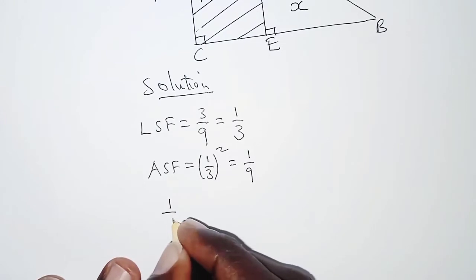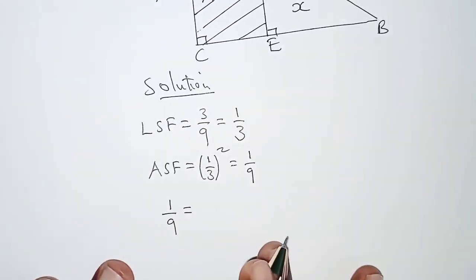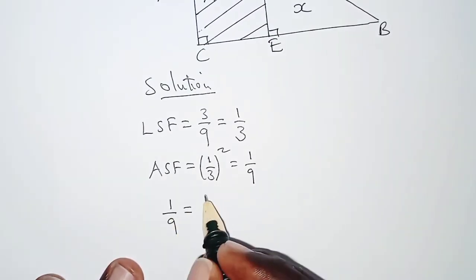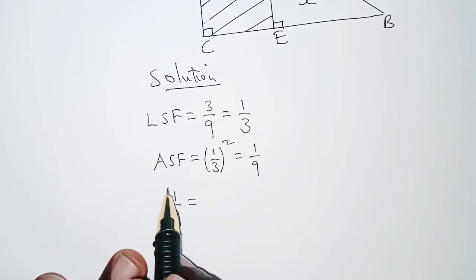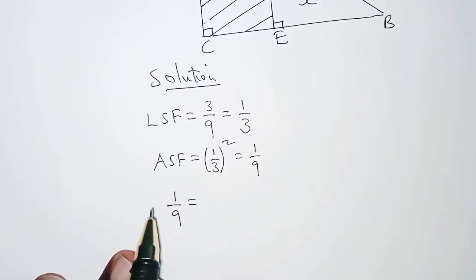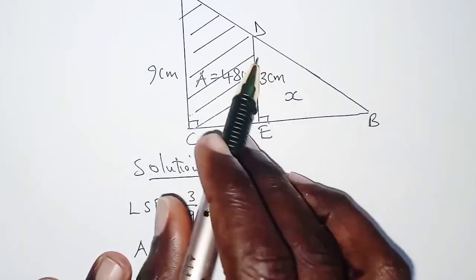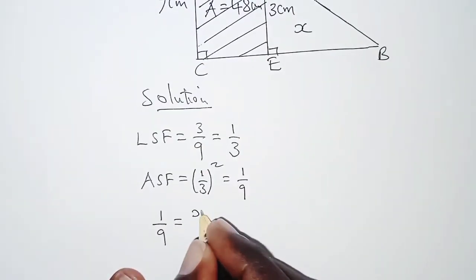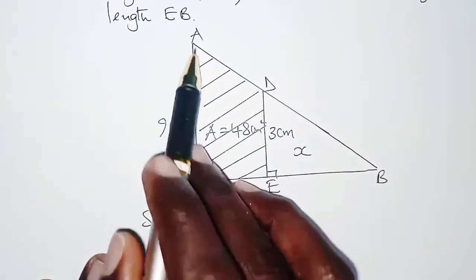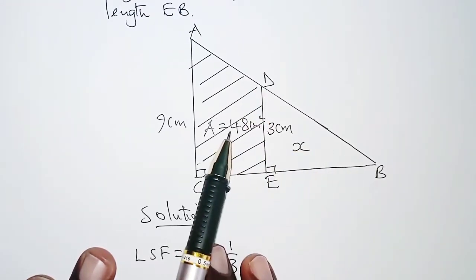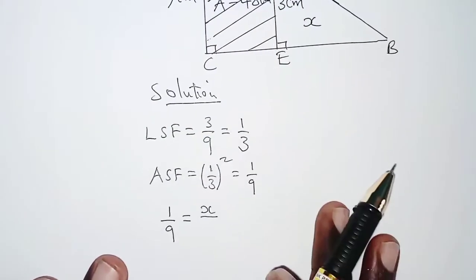So we have area scale factor which is 1 over 9. That should be equal to the area of the smaller triangle over the area of the bigger triangle. In this area scale factor of 1 over 9, 1 is small and 9 is bigger, so small should be on the numerator and big should be on the denominator. The unshaded part is smaller, so x is on the numerator over the whole of this bigger triangle. Its area should be the area of the unshaded part which is x plus the area of the shaded part which is 48, so we have 48 plus x.